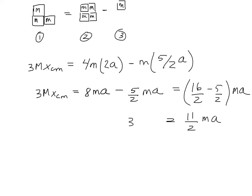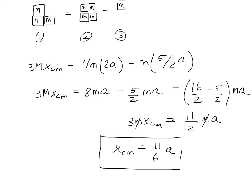Over here we have 3m·xcm. The m's cancel and dividing through by 3, we get xcm equals 11/6 a, which is what we got before. So this is an alternative way of finding the center of mass — take a 4-block system, remove a corner, and you get the 3-block system.